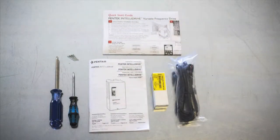Inside the box we'll find the Pentek IntelliDrive, pressure transducer, and transducer cable. A few tools you'll want to make sure you have readily available are the Pentek IntelliDrive owner's manual, a Phillips head screwdriver, a small slotted screwdriver, and two to four screws to mount the Pentek IntelliDrive.